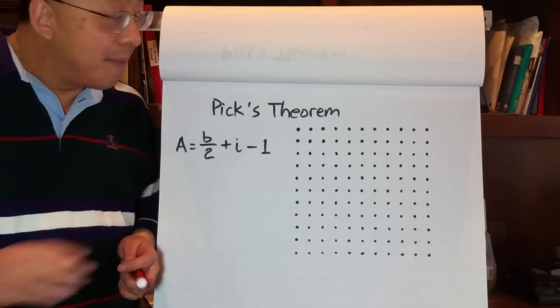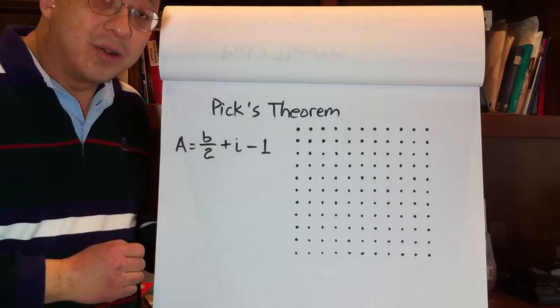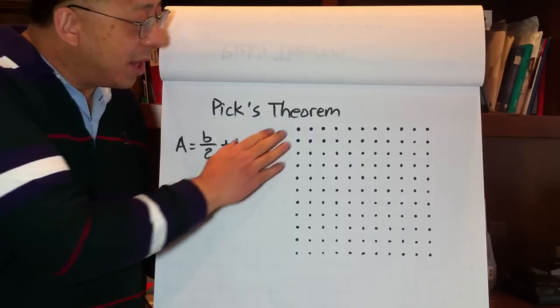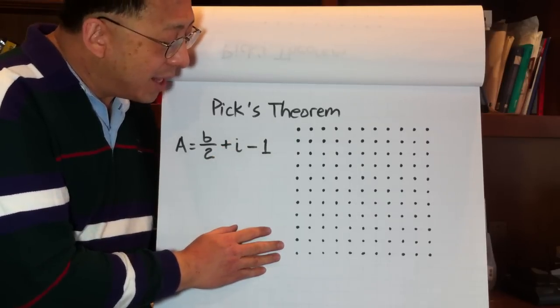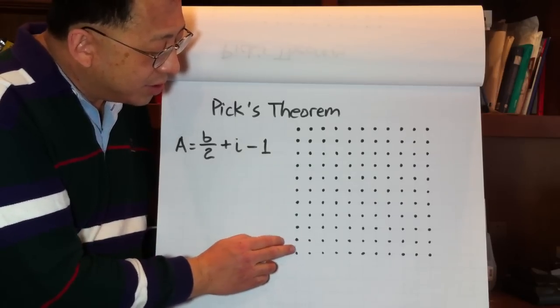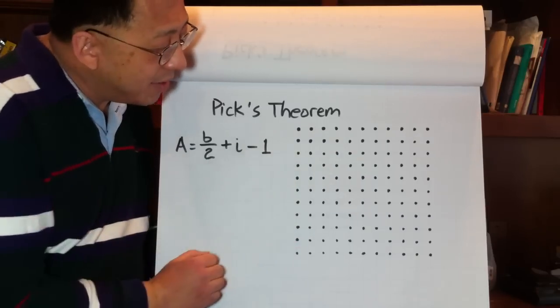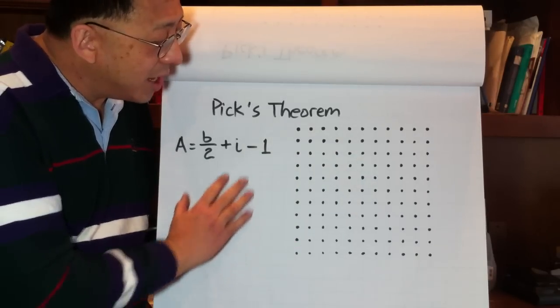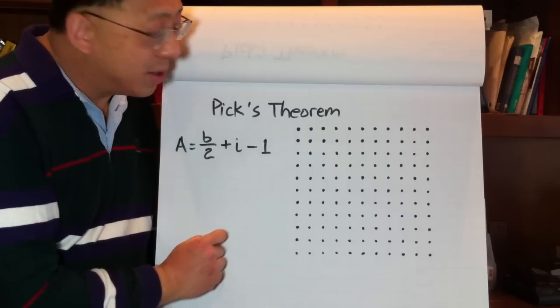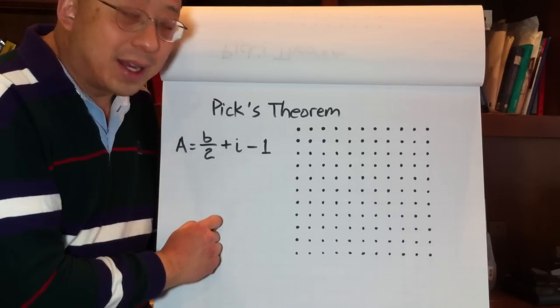So today we're going to discuss Pick's Theorem. Pick's Theorem is a tool that will come in handy as we solve problems. Let's suppose we're given a lattice. A lattice, these are lattice points here. Lattice points, really these points are at the intersections of grid lines. It's hard to see from this video, but this is actually a grid that I'm drawing on. And these are the lattice points, designated by these black dots.